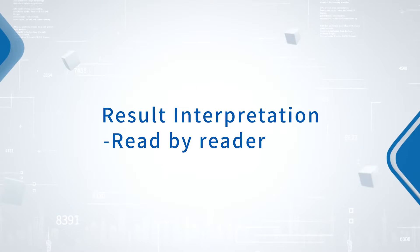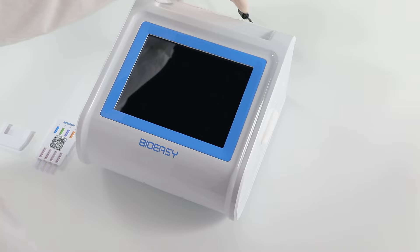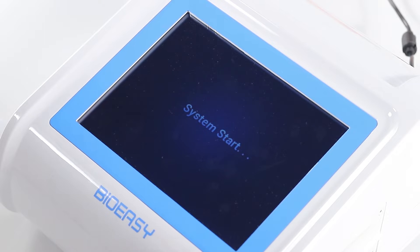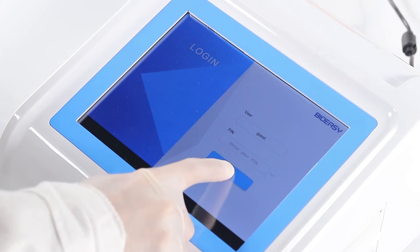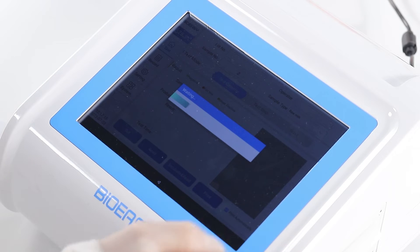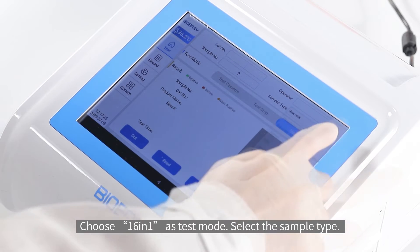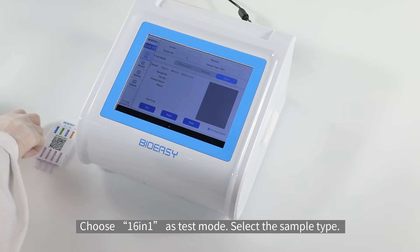Result Interpretation. Read by Reader. Turn on the reader, log in the account. Choose 16-in-1 as test mode, select the sample type.